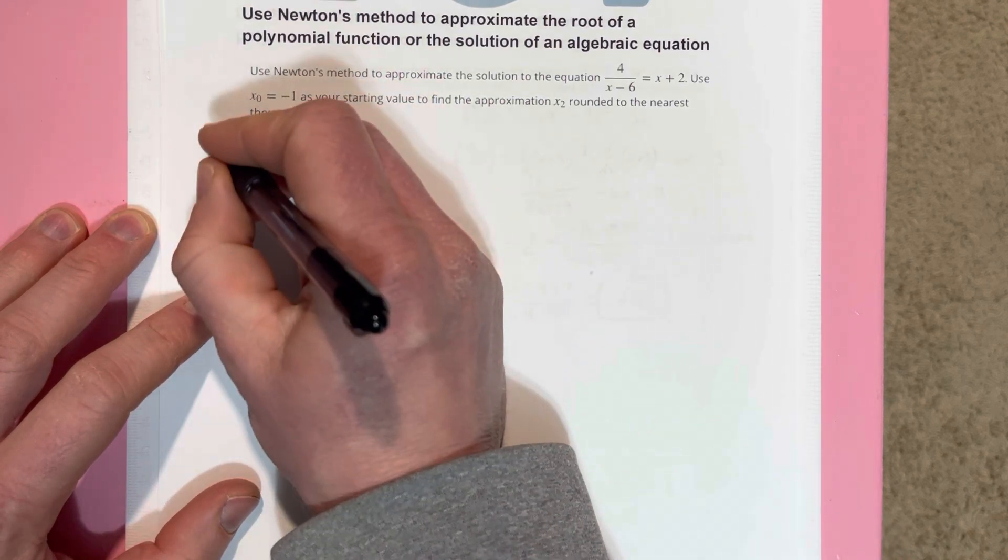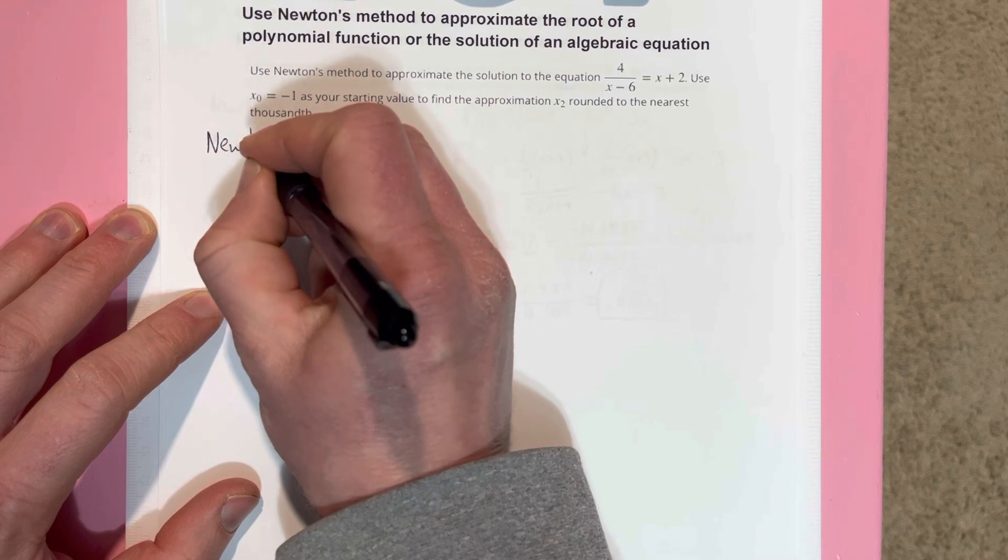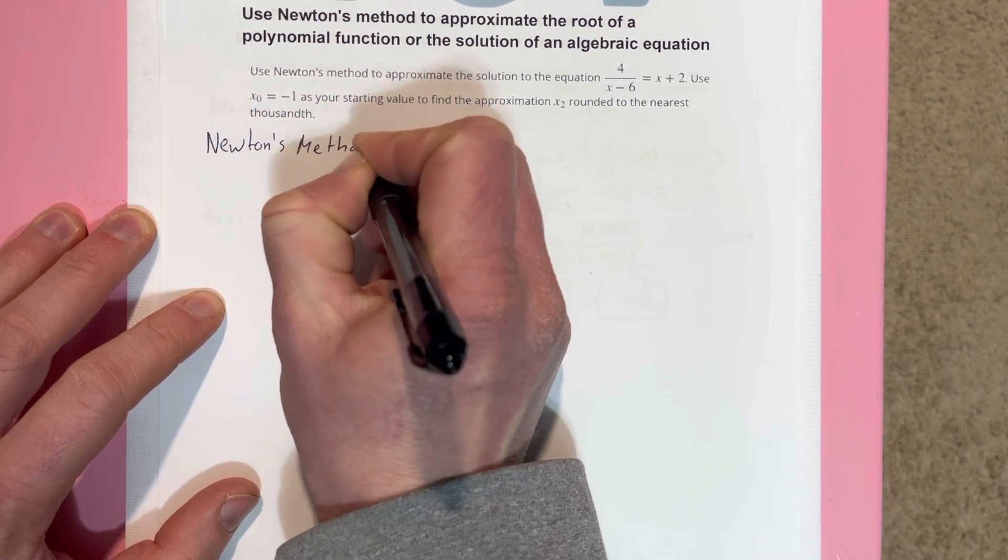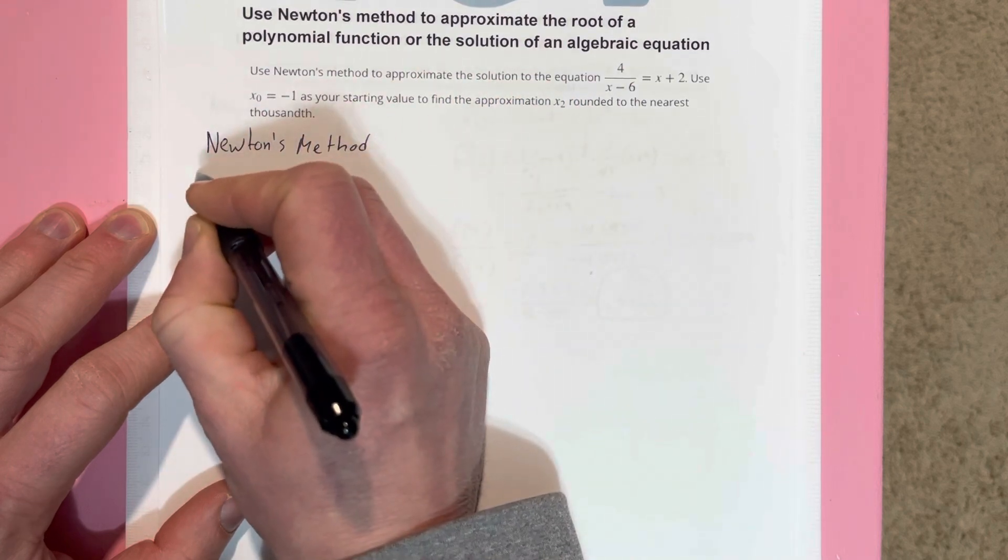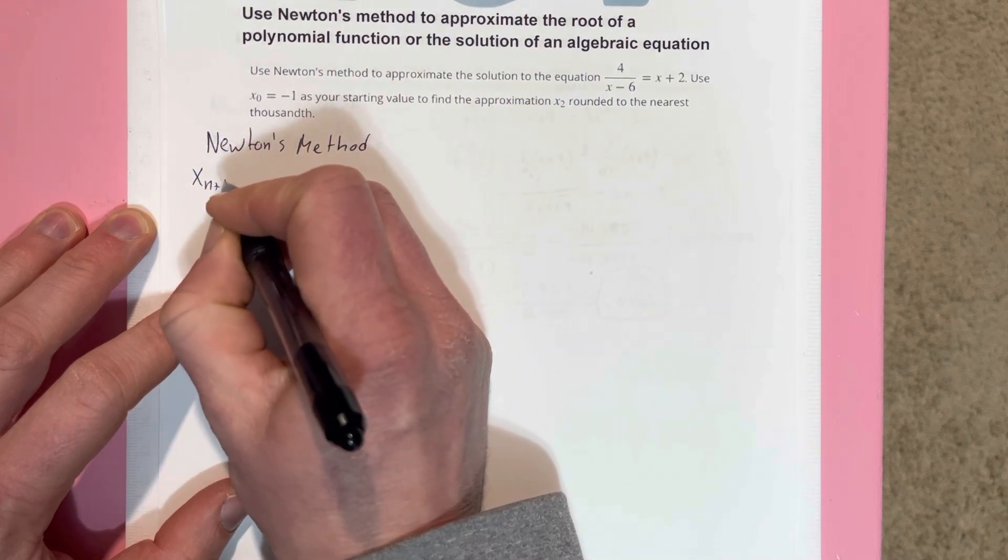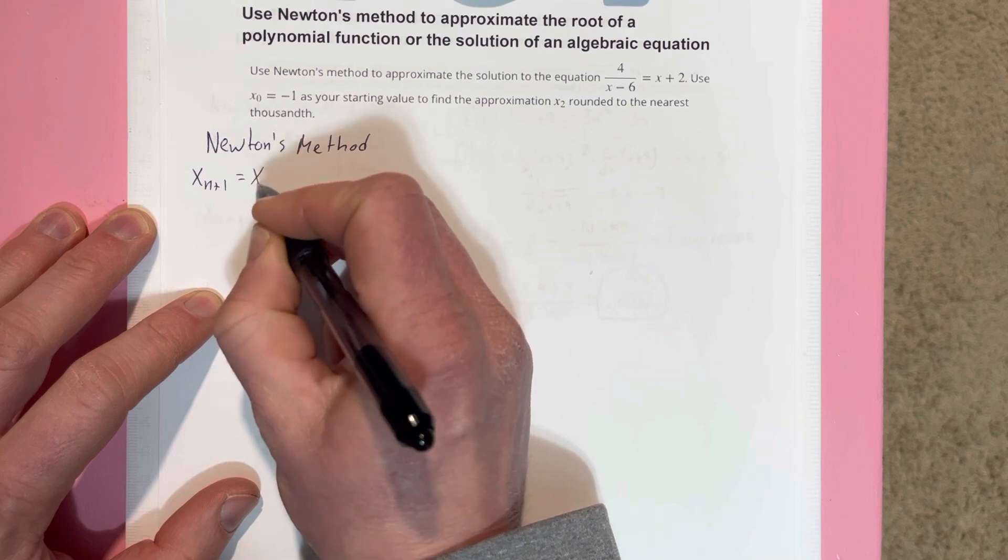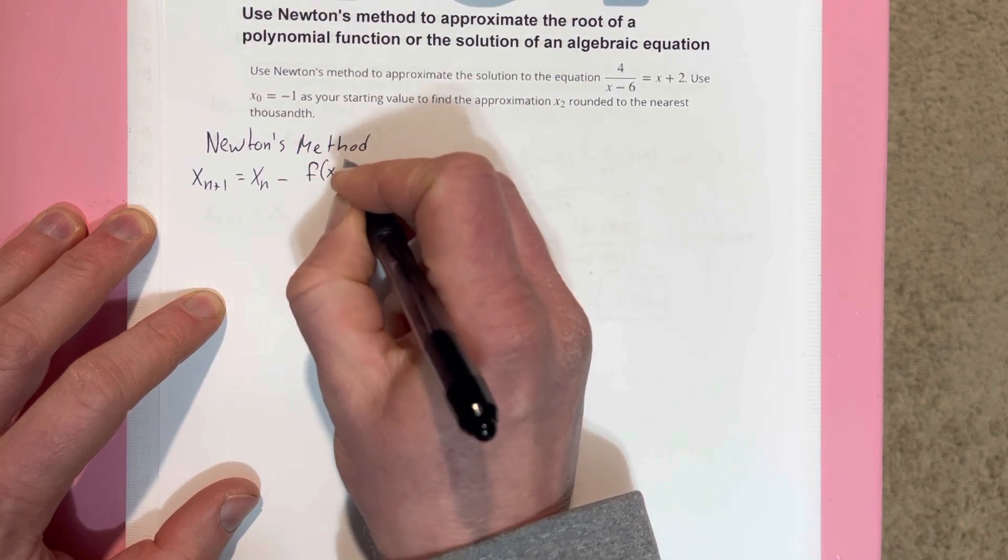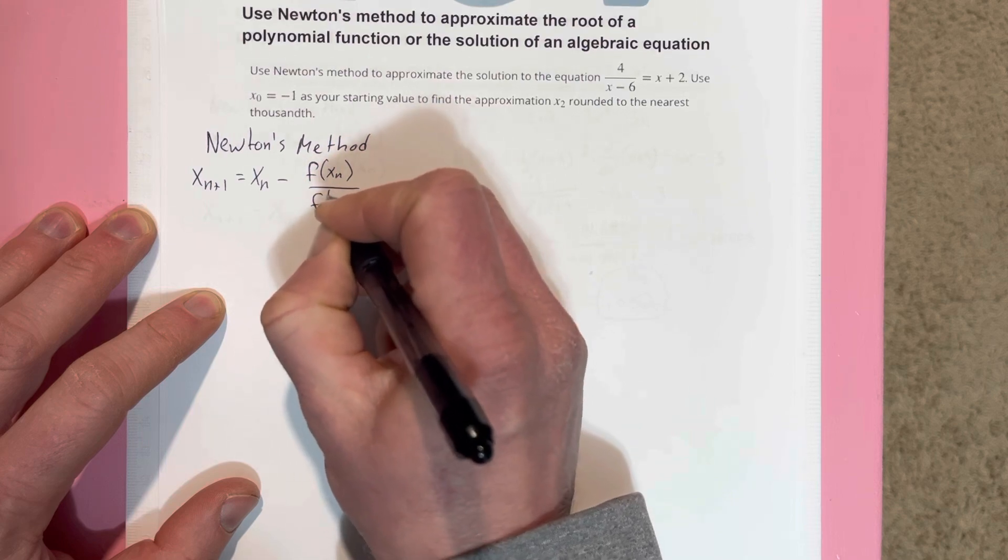What is Newton's method? Newton's method is x_{n+1} is equal to x_n minus f(x_n) over f'(x_n).